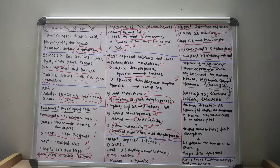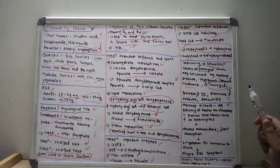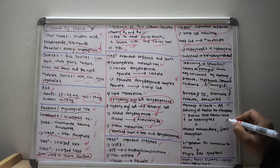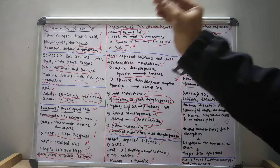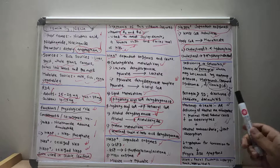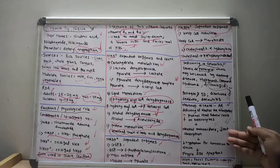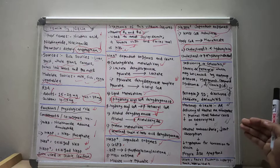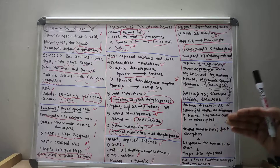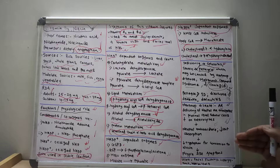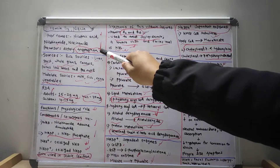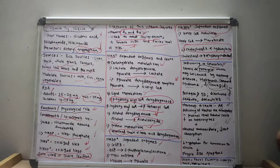Hartnup disease is an autosomal recessive condition involving deficiency of neutral amino acid transporters in proximal renal tubular cells and enterocytes. This leads to neutral aminoaciduria and decreased gut absorption of neutral amino acids. Since tryptophan is a neutral amino acid and the precursor for niacin, decreased tryptophan availability leads to a pellagra-like syndrome.